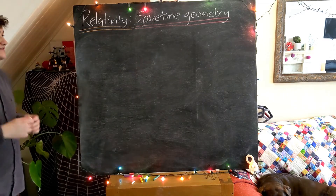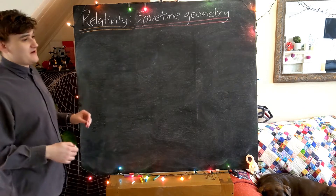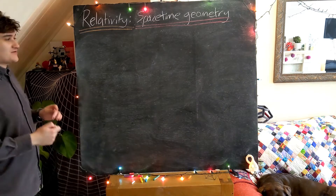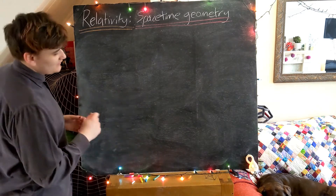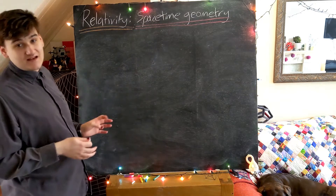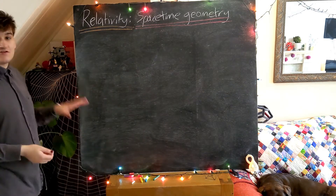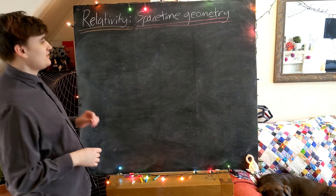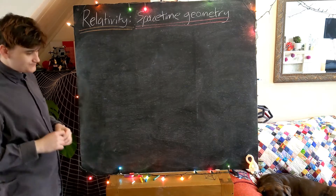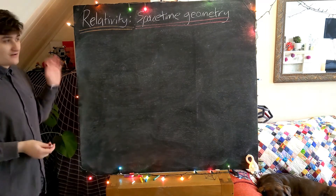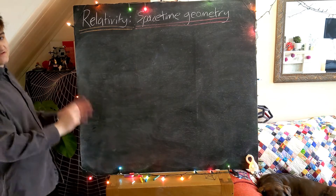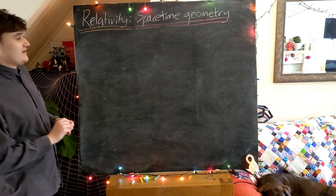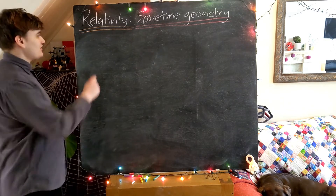So I'm going to begin by discussing the geometry of a space — not a space-time, just a space — that we're hopefully quite familiar with, which is the Euclidean geometry of real space. Once we've seen how we formalise standard Euclidean geometry, we can then make the leap to relativity and start discussing Minkowski geometry. But for now let's just stick with R³ and go back to Euclidean geometry.